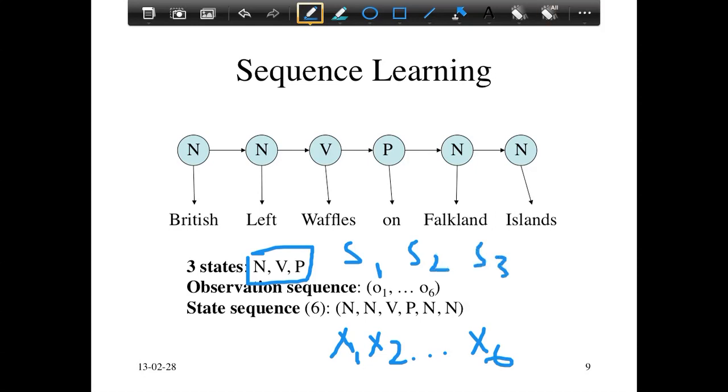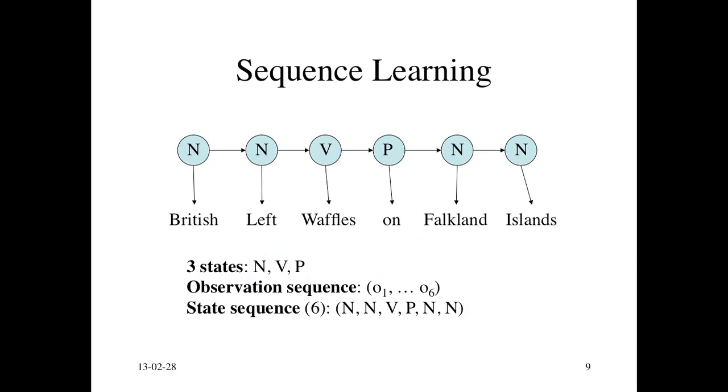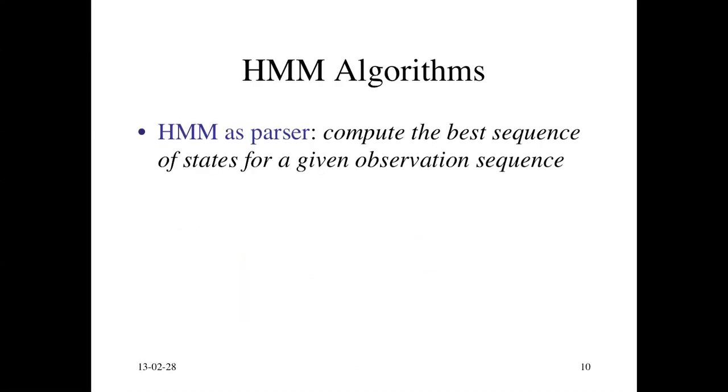We're going to look at more aspects of hidden Markov models. In particular, hidden Markov models need some algorithms for them to be useful. We're going to look at HMMs as a parser. Give me the best sequence of states for a given observation sequence, assuming all the probabilities are given.